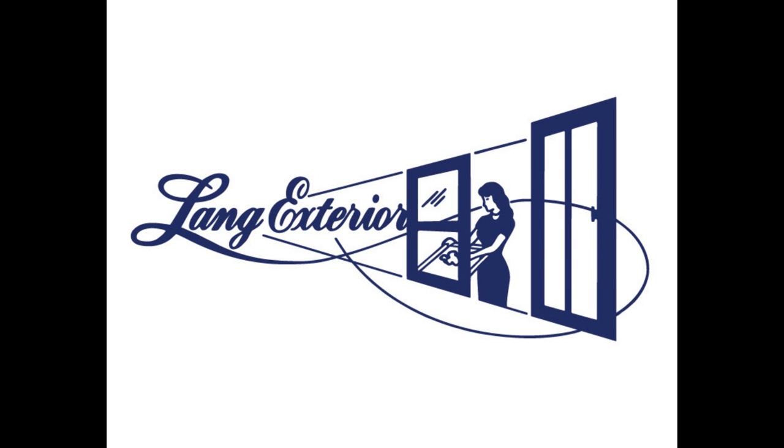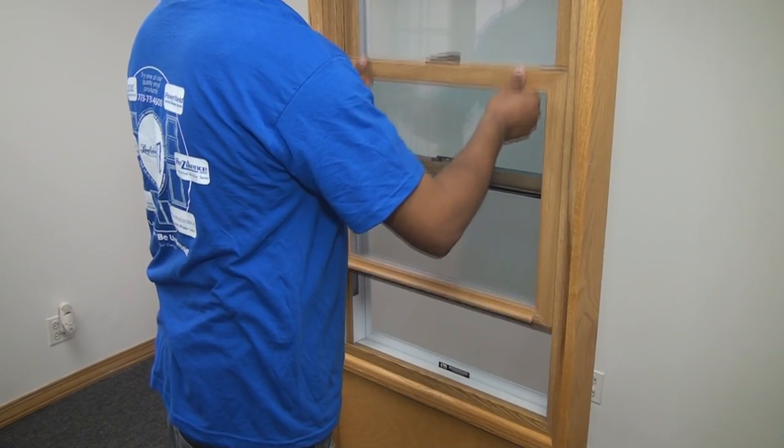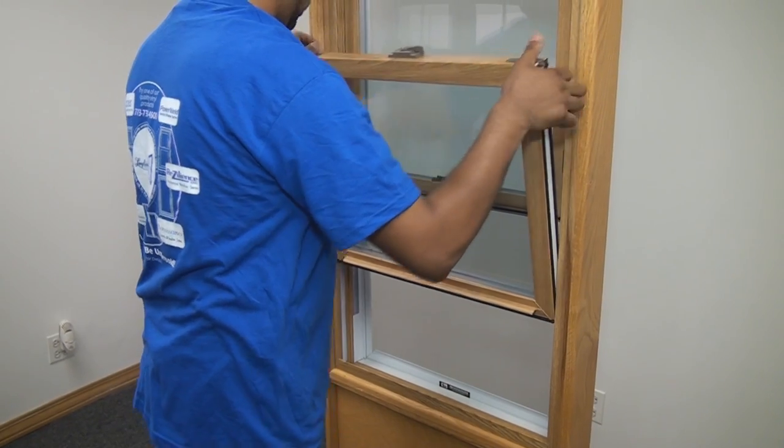This video demonstrates how to tighten or loosen a spiral balancer. First, unlock the double-hung window. Lift the bottom sash up and pull the sash in towards you.